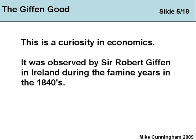The first one we'll look at is called the Giffen good — this is a curiosity in economics, a very rare curiosity. It was observed by Sir Robert Giffen in Ireland during the famine years of the 1840s, when Ireland suffered from a major natural disaster when the potato crop failed and literally millions of people were affected.